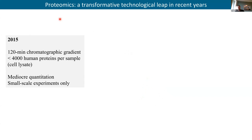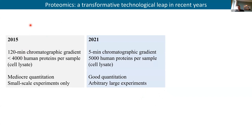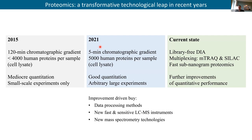Looking at the history of proteomics, not so long ago the state of the art was identifying around 4,000 human proteins from a human cell lysate with a two-hour nanoflow chromatographic gradient. In 2021, we reached about 5,000 proteins from a five-minute gradient — better data quality than six years before, with about 20 times higher throughput. We still keep gaining, gradually addressing limitations of DIA proteomics such as the need to use a spectral library and incompatibility with multiplexing.